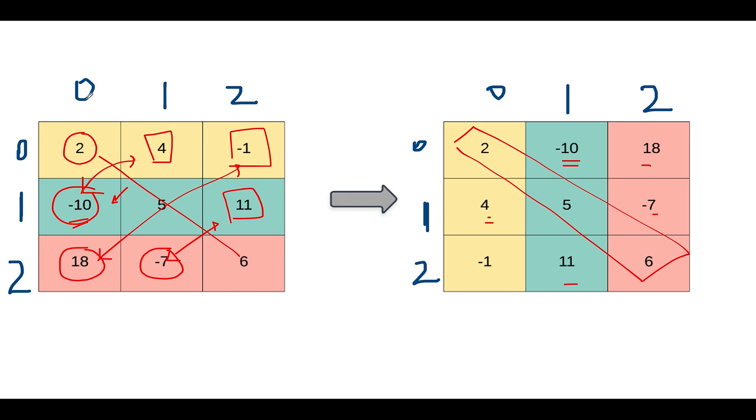If you carefully see, the index of this element happens to be 1, 0—the row is 1, the column is 0—and it is getting the new position as 0, 1. So what is the new position of -10? It is 0, 1, 0th row and first column. So 1, 0 is getting replaced to 0, 1.